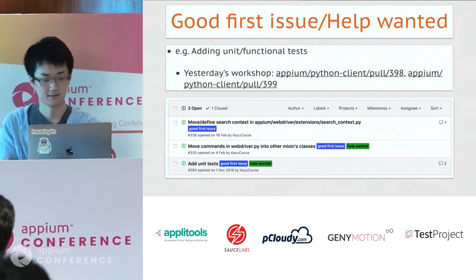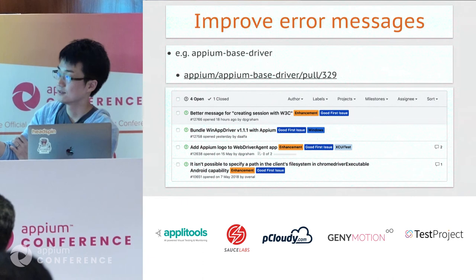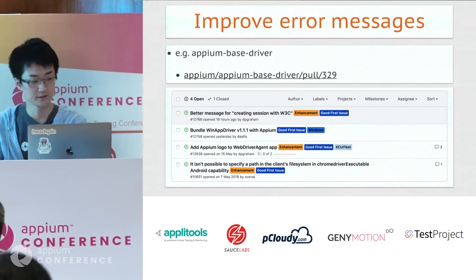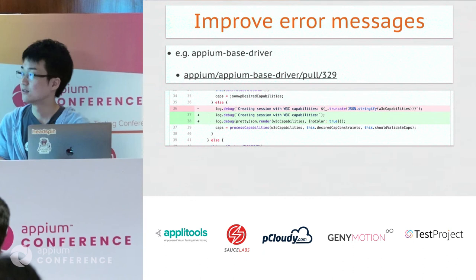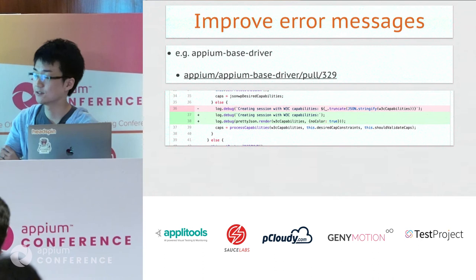We also have some labels in the Appium main repository — there is 'enhancement' or 'good first issue.' In some issues, it's just improving an error message. This change also happened yesterday — very small, just a log debug message. But this is also a very good 'good first issue' to contribute to the Appium code base.